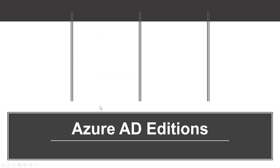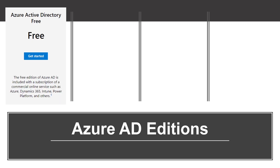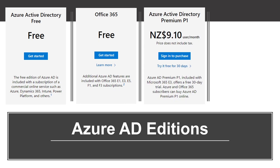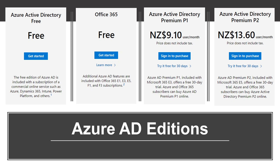Azure AD is available in four editions: the free tier, the Office 365 apps tier, Azure Active Directory Premium P1 tier, and Azure Active Directory Premium P2 tier. Let me explain the differences in these tiers.